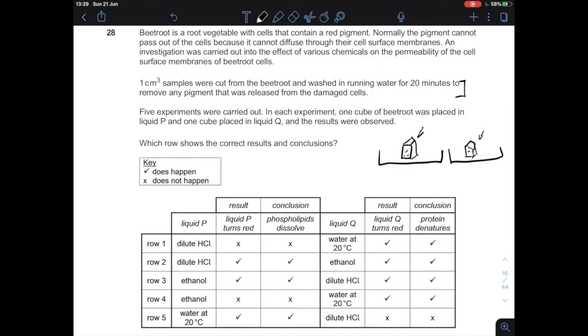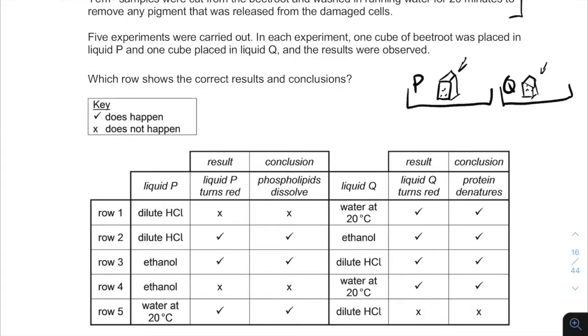Five experiments were carried out. In each experiment, one cube of beetroot was placed in liquid P, and the other cube placed in liquid Q. And the results were observed, which also showed the correct results and conclusions.